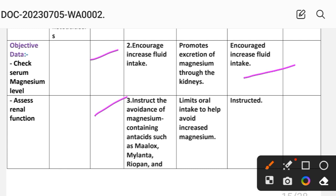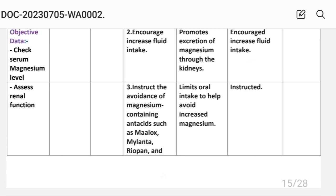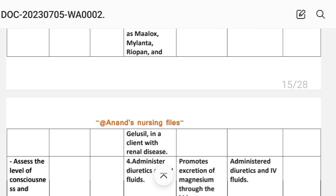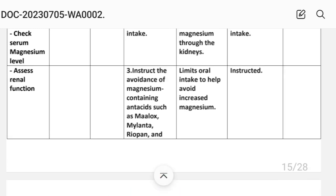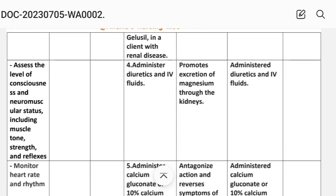Third intervention: instruct avoidance of magnesium-containing antacids such as Mylox, Mylanta, Ripon, and Jalousil for clients with renal disease. The rationale is that this limits oral magnesium intake to help avoid increased magnesium levels. Implementation: instruct the patient accordingly.